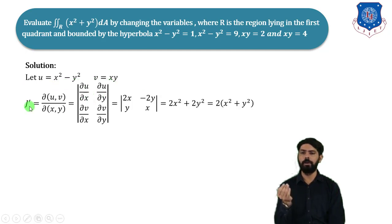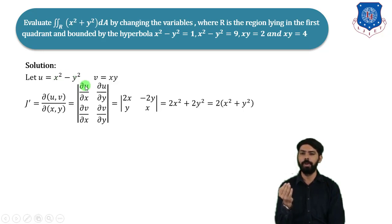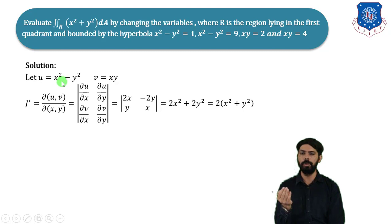We find J' = ∂(u,v)/∂(x,y), the determinant of partial derivatives. First, ∂u/∂x: partial differentiation of u = x² − y² with respect to x gives 2x (y is constant, so −y² term vanishes). Then ∂u/∂y: with x constant, the derivative of −y² is −2y.